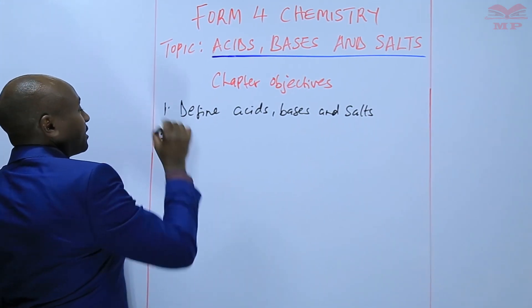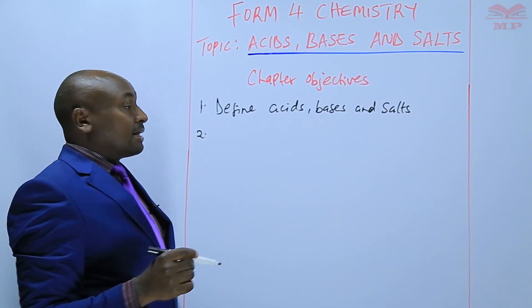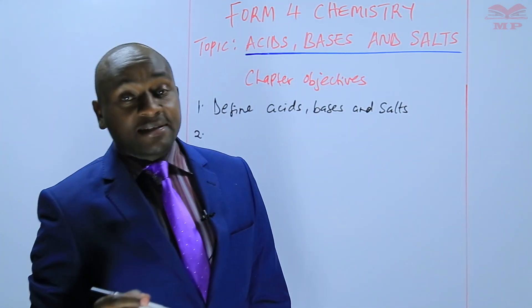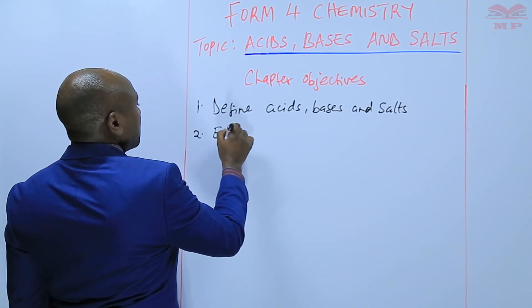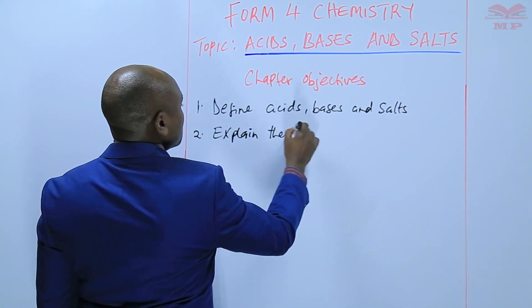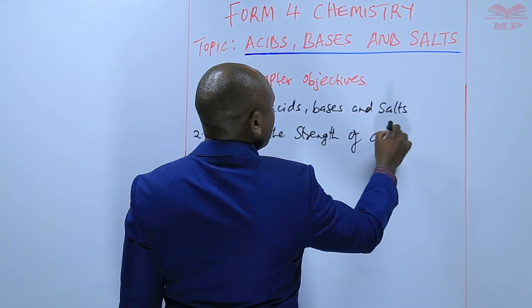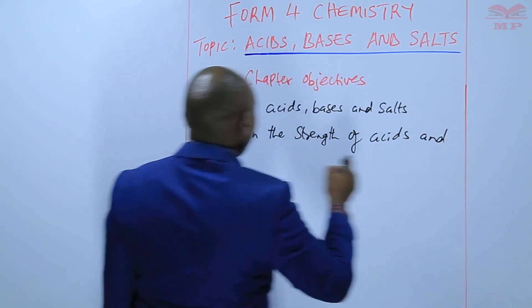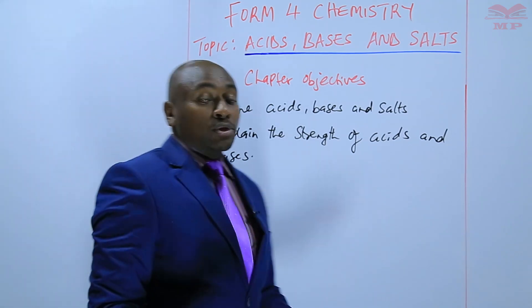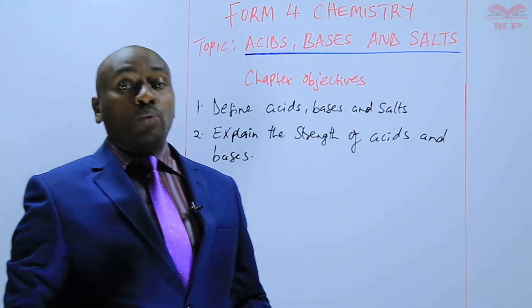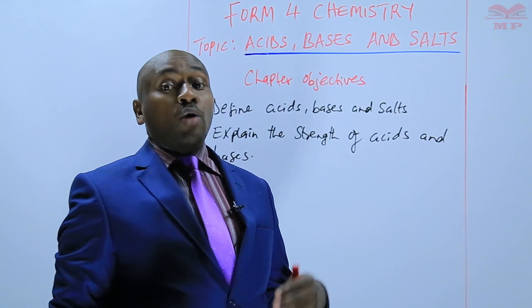The second objective: the learner should be able to explain the strength of acids and bases. This basically means being able to understand what is a strong acid, what is a weak acid, what is a strong base and what is a weak base.